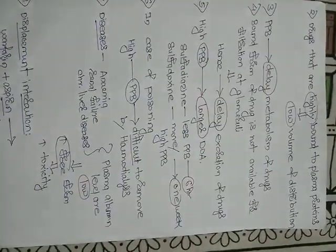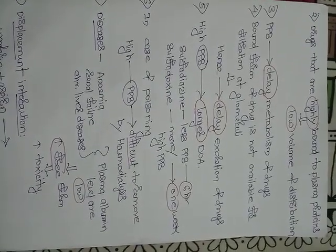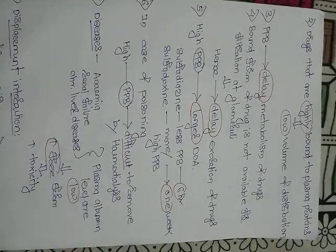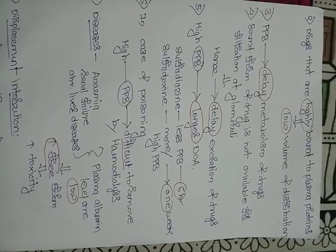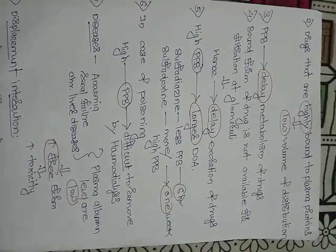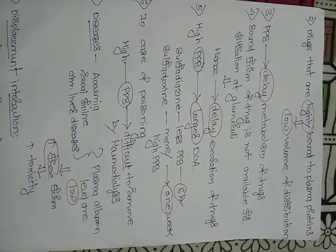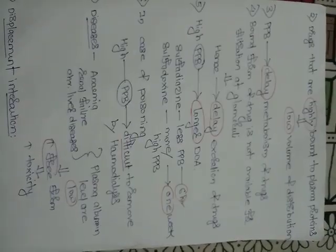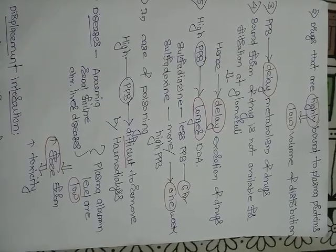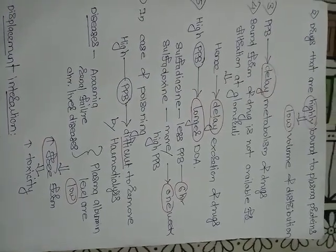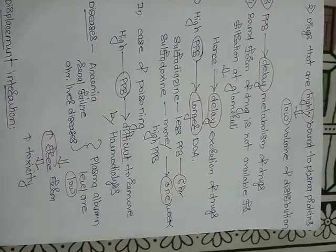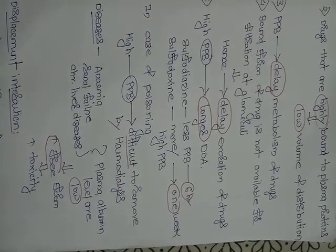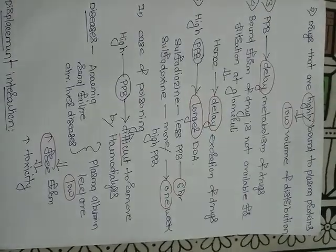Drugs that are highly bound to plasma proteins have a low volume of distribution, meaning most of the drug remains in the plasma. Plasma protein binding is inversely proportional to volume of distribution. It also delays the metabolism of the drug.